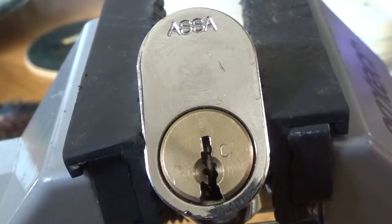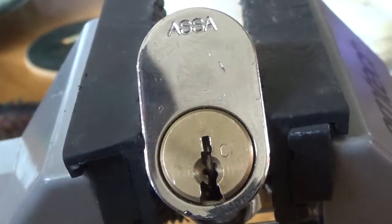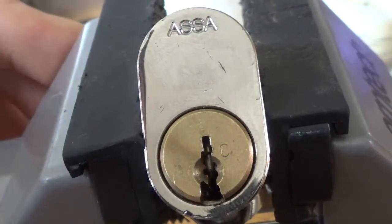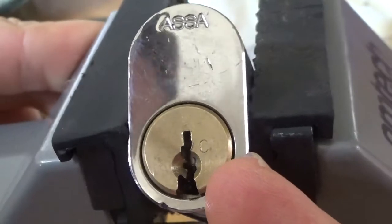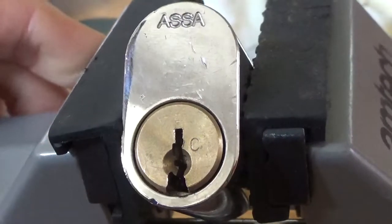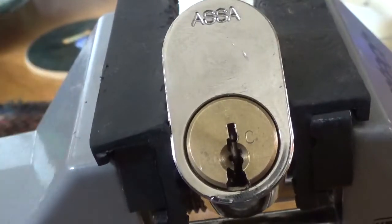Hello everybody. So we have an Assa twin Combi here, or at least I think it's a Combi. It has a little C over there next to the keyway. I think that's what the C stands for, Combi.